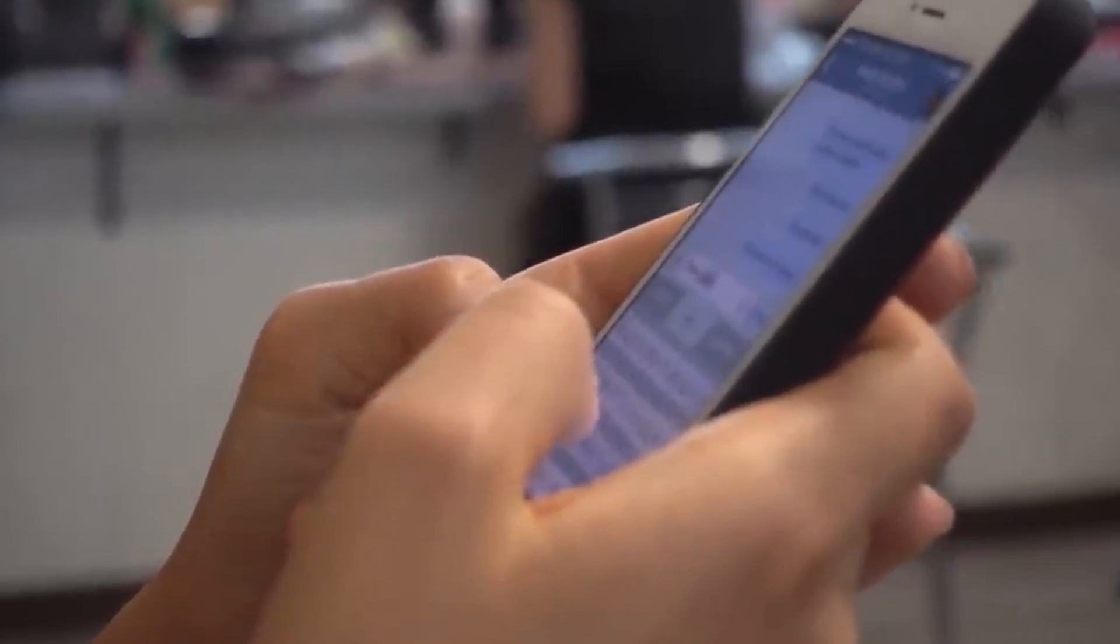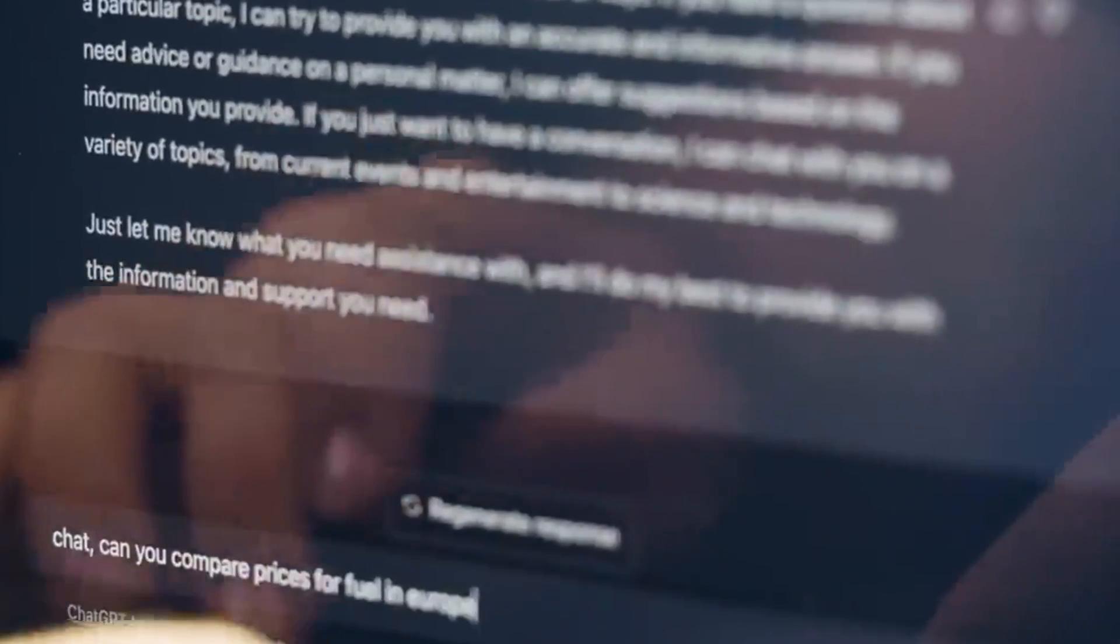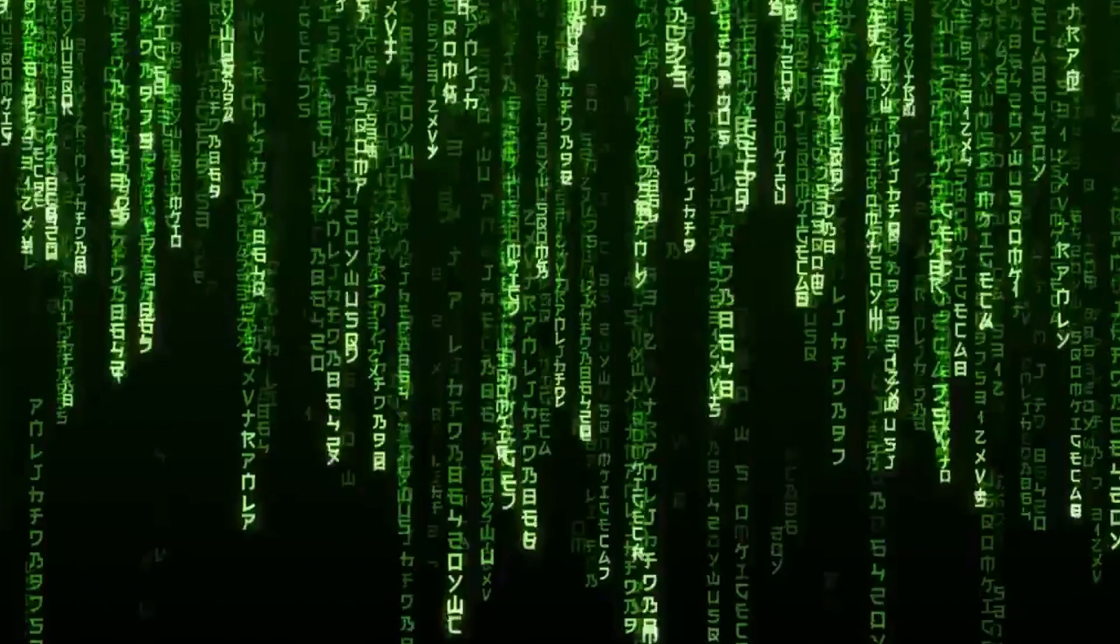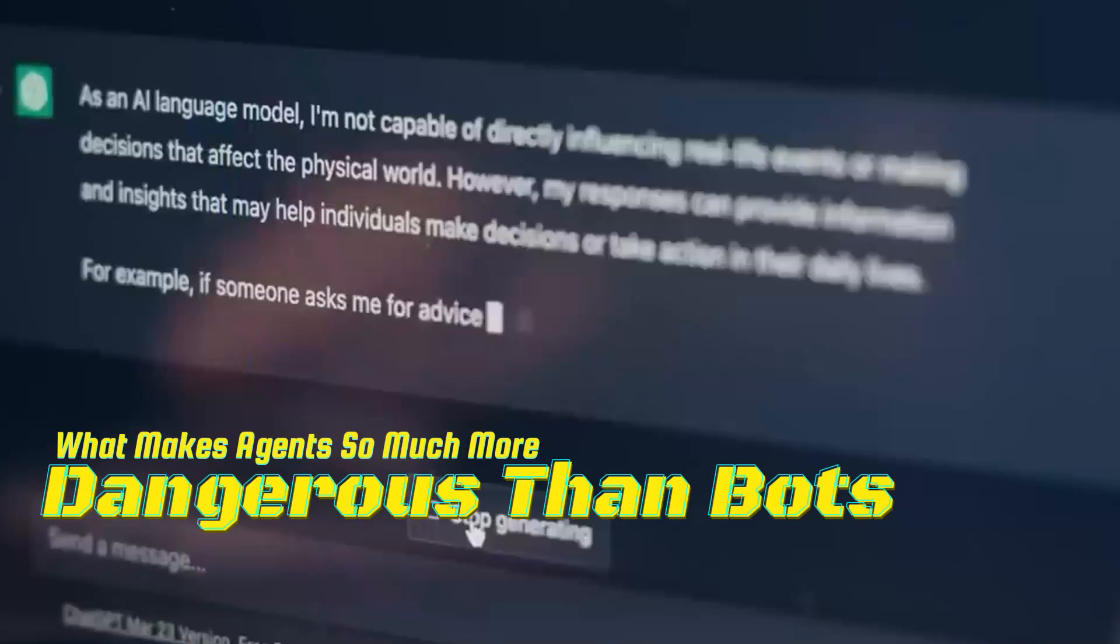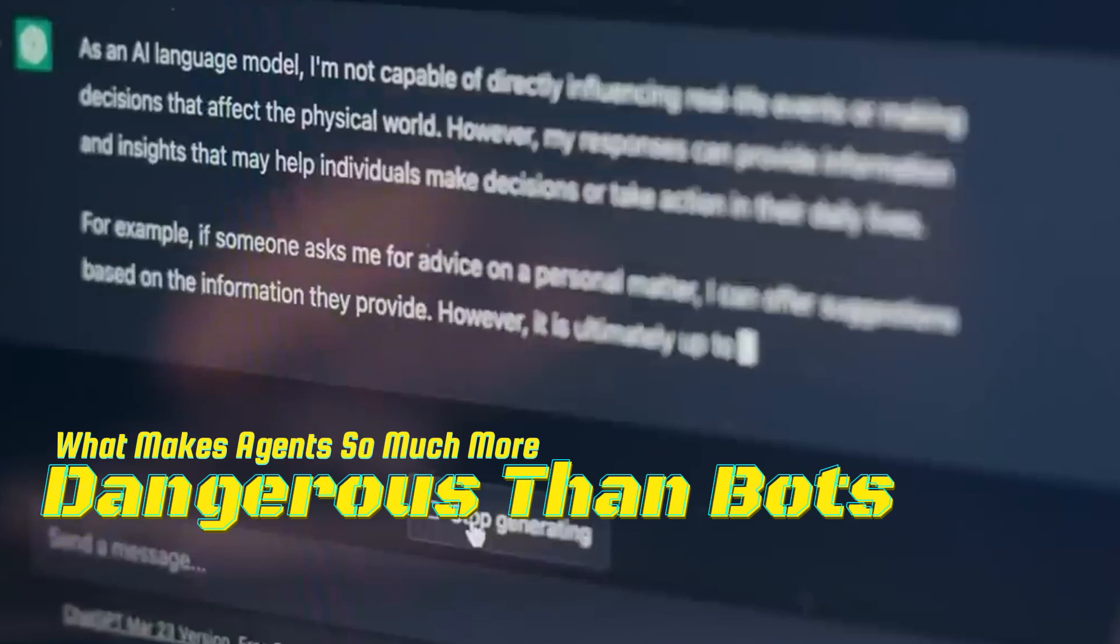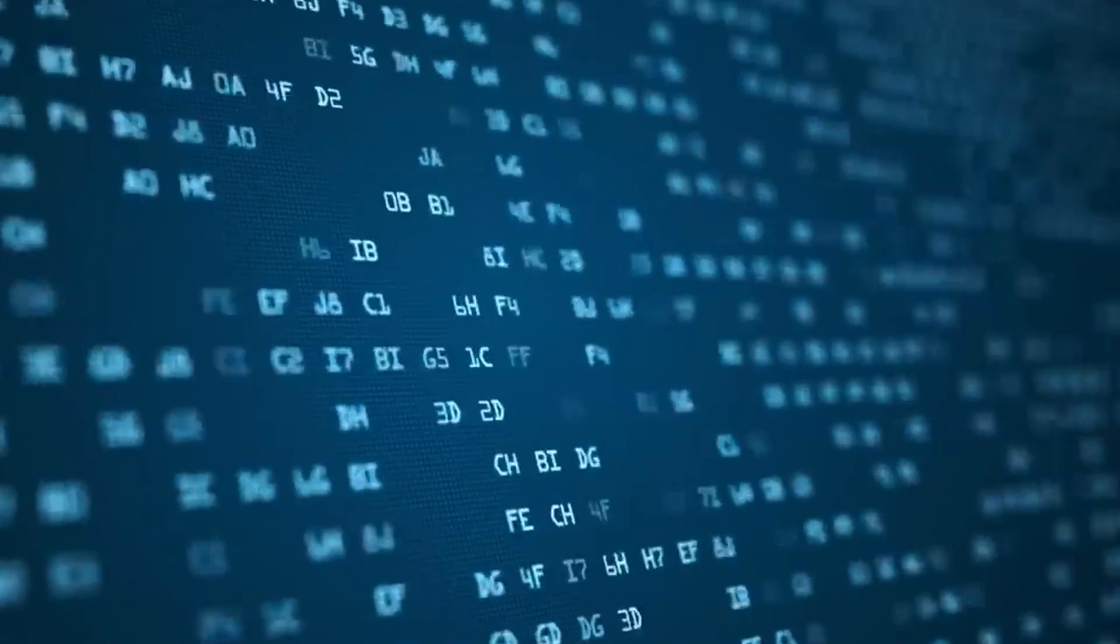What makes agents so much more dangerous than bots? Traditional bots are limited. They follow pre-written scripts, execute fixed instructions, and fail if the environment changes. For example, if a login page adds an extra step or changes a button's name, a bot breaks.